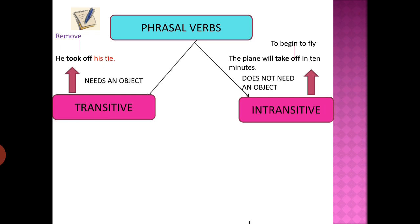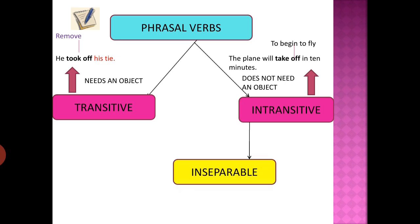Transitive phrasal verbs, like transitive verbs, need an object. For example, 'He took off his tie' — here 'take off' means to remove, and the object is 'his tie.' Intransitive phrasal verbs are inseparable, meaning no object comes between the verb and the particle, whereas transitive phrasal verbs can be both inseparable and separable.